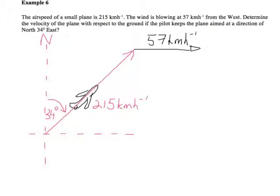The resultant vector you're going to get is the sum of the velocity vector the plane would have if the wind were still, plus the vector from the wind, because the wind is going to be blowing it a little bit off its course. So your resultant vector is going to go from the start of the plane vector to the end of the wind speed vector.